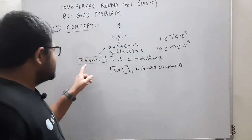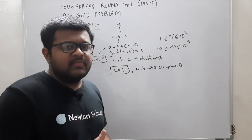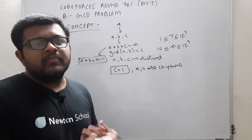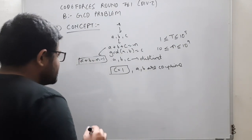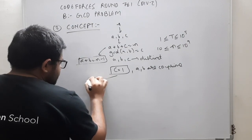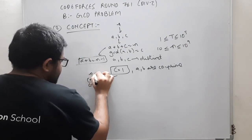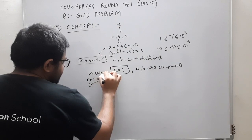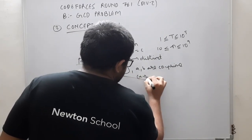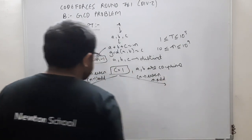So now we have the property that a plus b equals n minus 1, and a and b are co-prime. Now n minus 1 can either be odd or even. If n minus 1 is odd, that means n is even. If n minus 1 is even, that means n is odd.